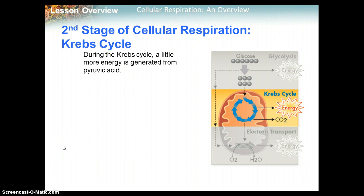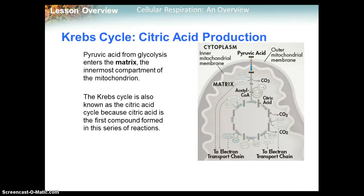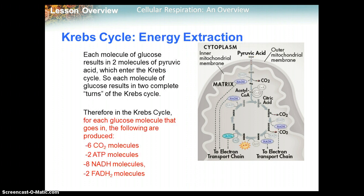The second stage of cellular respiration is the Krebs cycle. During the Krebs cycle, a little more energy is generated from the pyruvic acid produced in glycolysis. Pyruvic acid from glycolysis enters the matrix — the innermost compartment of the mitochondrion. The Krebs cycle is also known as the citric acid cycle because citric acid is the first compound formed in this series of reactions. Each molecule of glucose results in two molecules of pyruvic acid from glycolysis, which enter the Krebs cycle — meaning two complete turns, one per pyruvic acid.